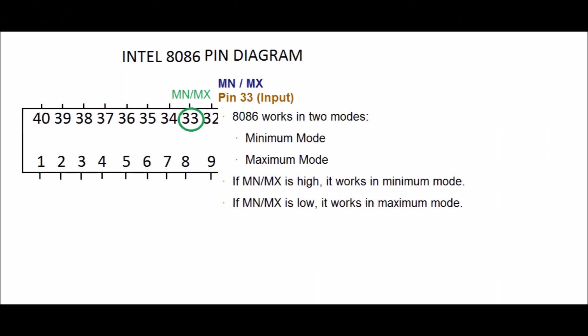MN/MX. PIN 33, input. 8086 works in two modes. A: Minimum mode. B: Maximum mode. If MN/MX is high, it works in minimum mode. If MN/MX is low, it works in maximum mode. PINs 24 to 31 issue two different sets of signals. One set of signals is issued when CPU operates in minimum mode. Other set of signals is issued when CPU operates in maximum mode.